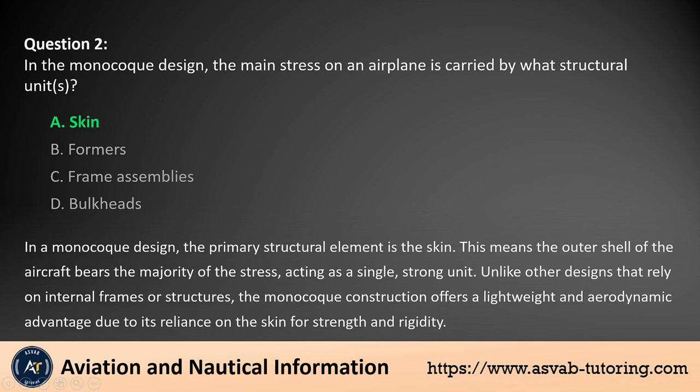The answer is A. In a monocoque design, the primary structural element is the skin. This means the outer shell of the aircraft bears the majority of the stress, acting as a single, strong unit. Unlike other designs that rely on internal frames or structures, the monocoque construction offers a lightweight and aerodynamic advantage due to its reliance on the skin for strength and rigidity.